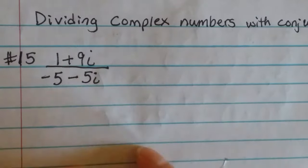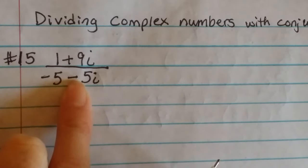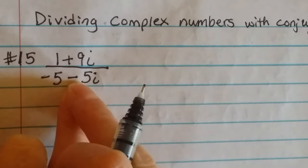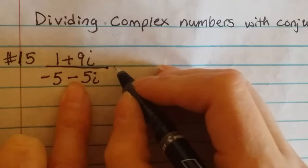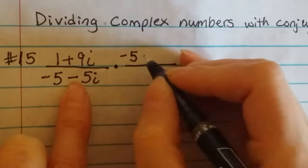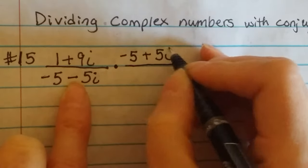The thing that really matters here is this sign in the middle on the bottom because the conjugates tells us that we need to do the opposite of that sign. So the opposite of that sign would be a plus. So I need to multiply top and bottom by -5 + 5i.